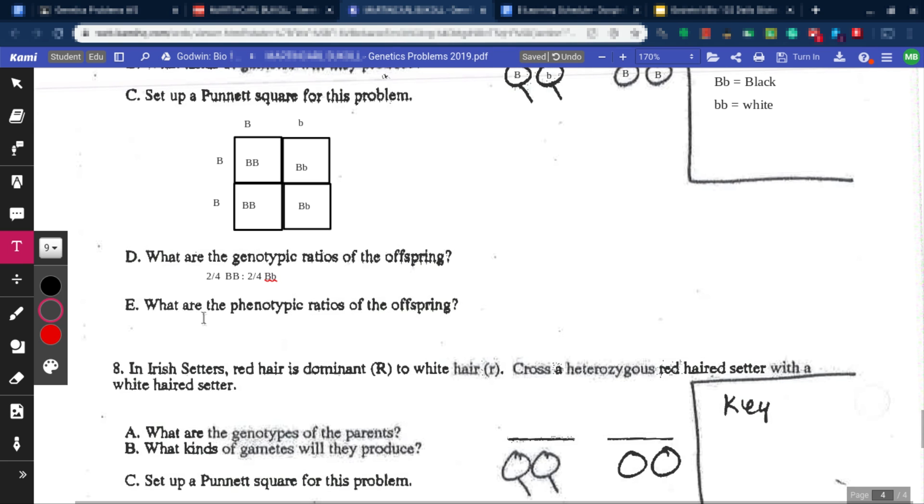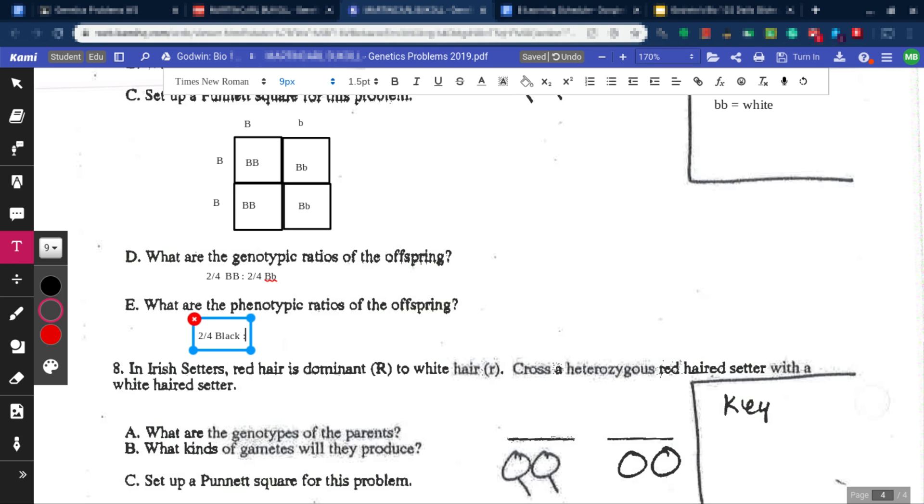And then phenotype ratios. That would be two fourths. And that would be black. Oh, never mind, that's 100% actually. Never mind, 100% black. Alright, there we go.